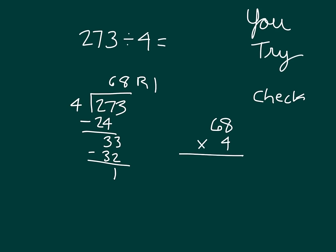4 times 8 is 32, place a 2, regroup a 3. 4 times 6 is 24, plus 3 is 27. So we have 272, add in the 1, you get 273, which is your check.